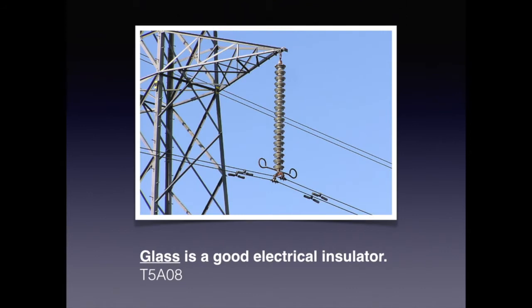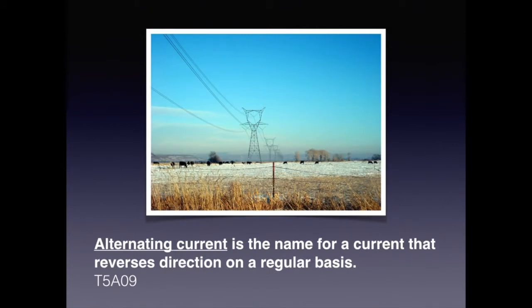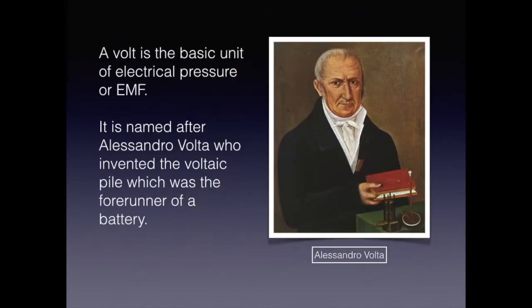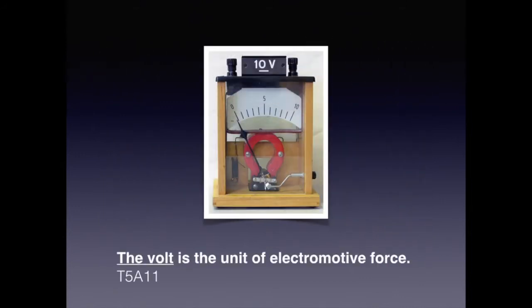Also remember that glass is a good insulator. For the exam, also know that alternating current is the name for a current that reverses itself on a regular basis — that regular basis is 60 cycles or 60 hertz. Power is a term that describes the rate at which electrical energy is used. Volt is a basic unit of EMF. It is named after Volta, who is the inventor of the Voltaic Pile, which is a forerunner of a battery. For the exam, know the volt is a unit of electromotive force.